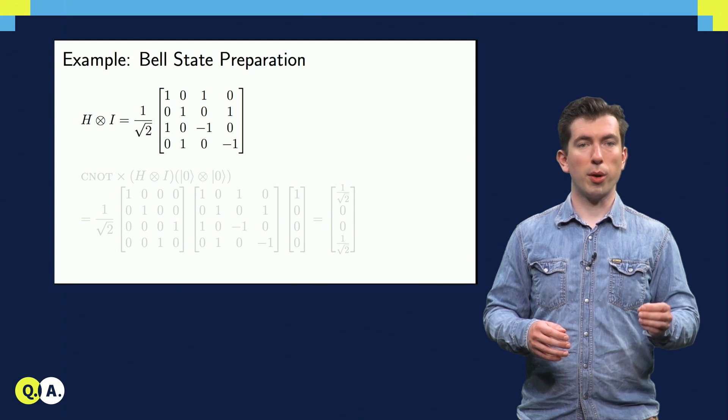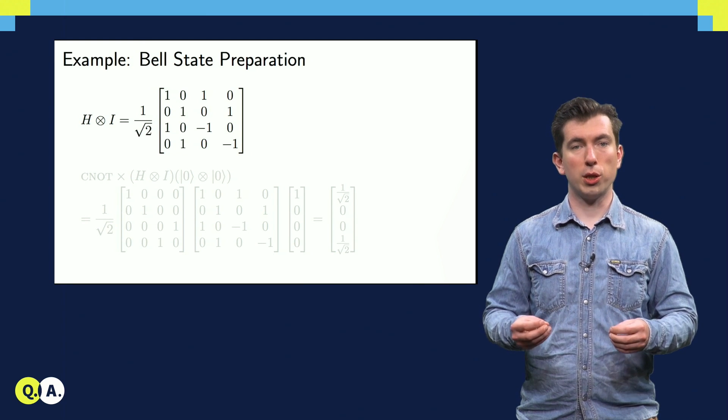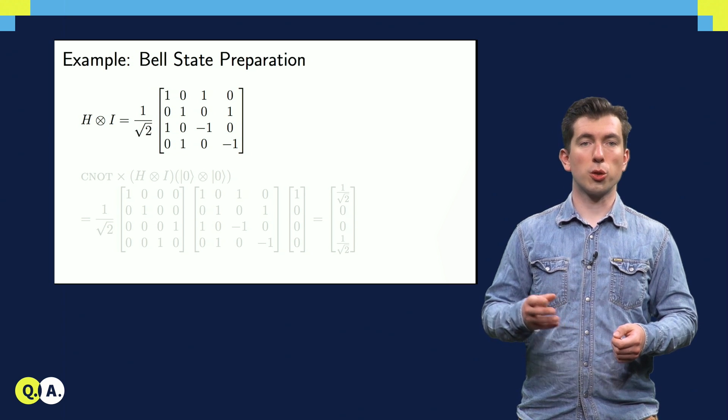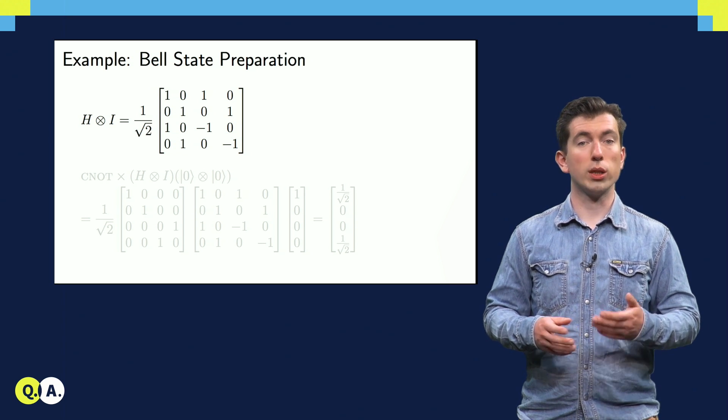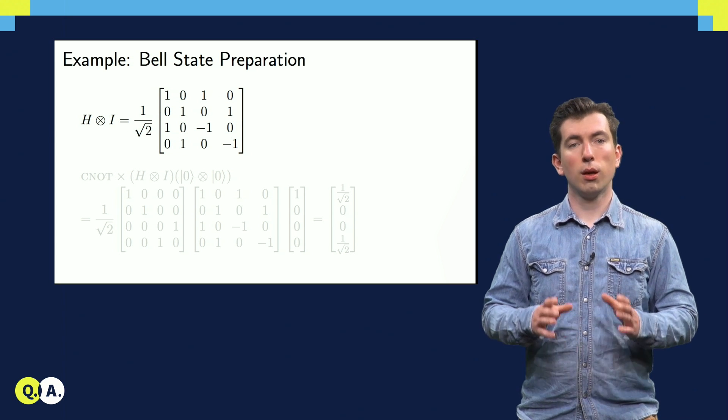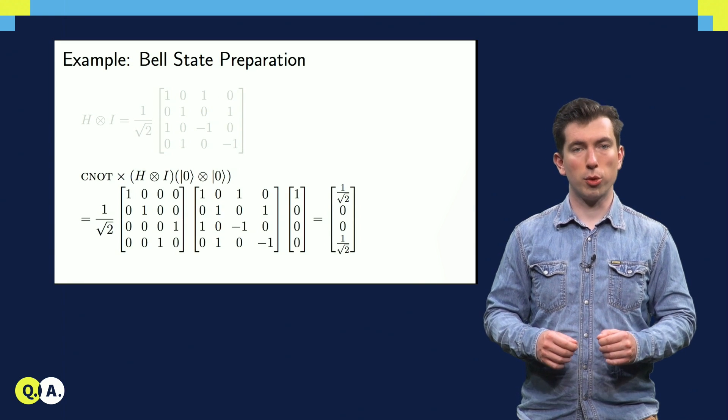The first step in preparing the Bell state is to perform a Hadamard operation on the first qubit, which has been initialized in the zero state. So we calculate the tensor product of the Hadamard with the identity, since we're not going to do anything to the second qubit immediately.